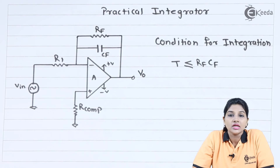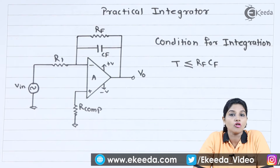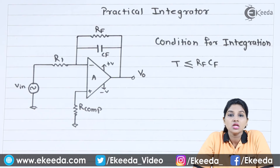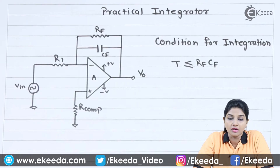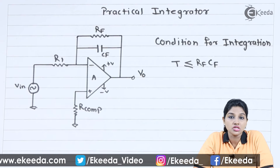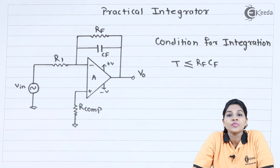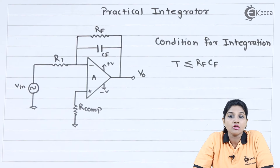We know that an integrator is a circuit used to produce an output waveform which is the integration of the input signal applied at the inverting or non-inverting terminal of the op-amp. The basic integrator circuit consists of a capacitor as a feedback element, but due to the capacitor the reactance becomes very high, which increases the gain of the circuit to infinity. So even if there is no input signal, the output can have a very high value — which is nothing but the error voltage.